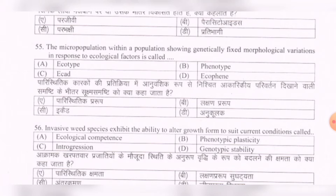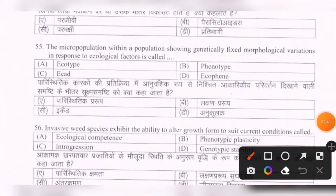Next question: The micro-population within a population showing genetically fixed morphological variations in response to ecological factors is called — options are: ecotype, phenotype, ecophene. The correct option is A — ecotype.